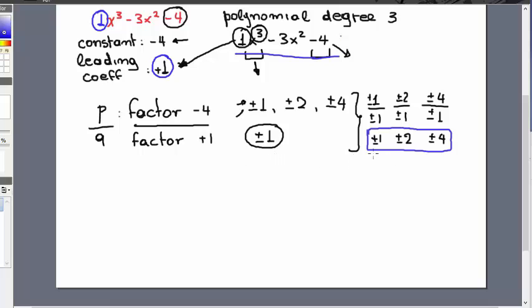After we have identified the possible zeros for this polynomial, let's try to factor the polynomial. If we have no other information, then what we need to do is trial and error: choose each one of those numbers, perform synthetic division.